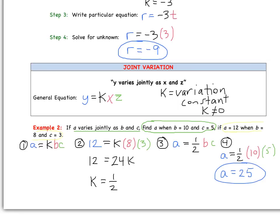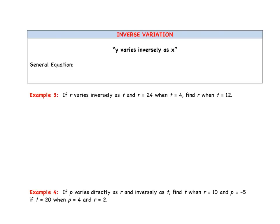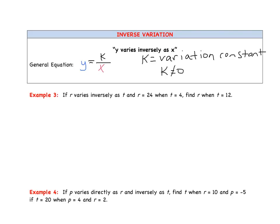The next type is inverse variation. The phrase you will see is 'Y varies inversely as X.' The general equation for an inverse variation is Y equals K divided by X. K is still the variation constant and cannot equal 0, and X also cannot equal 0 because that would make the expression undefined.